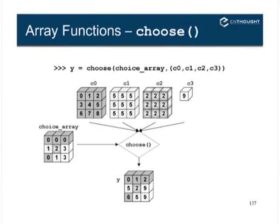All of those functions are available and you can use them. Now let's move on to a few more functions for doing selections out of an array. This is the choose function — it's a really funny function — and as you look at it you may wonder why they even bother to have it, but I'll show you why in just a minute. So we have the choice array, and as a second argument we give a list of arrays that we're going to choose values out of.